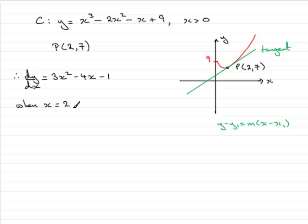we would have that dy/dx equals 3 times 2² minus 4 times 2 minus 1. And if you work that out, what you're going to get is 3. So the gradient for the tangent then is 3.